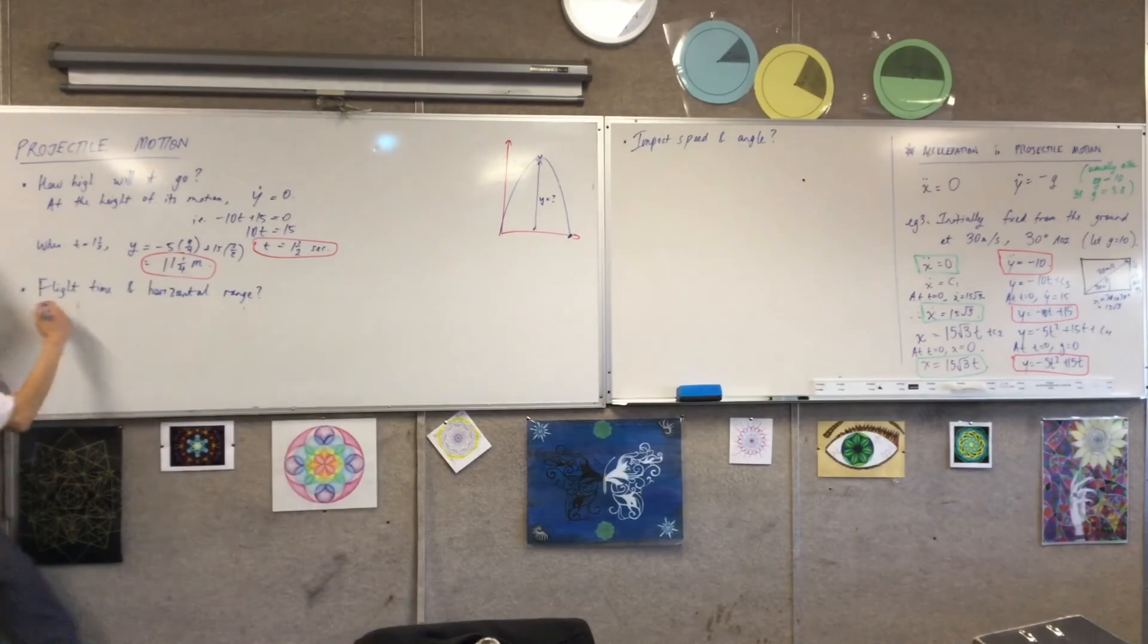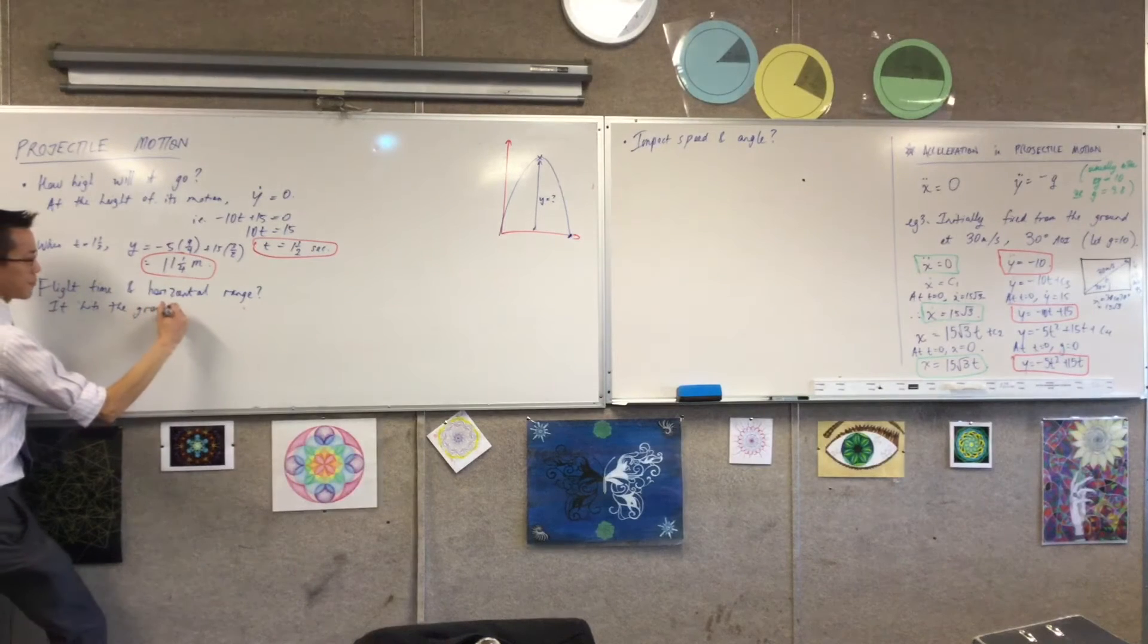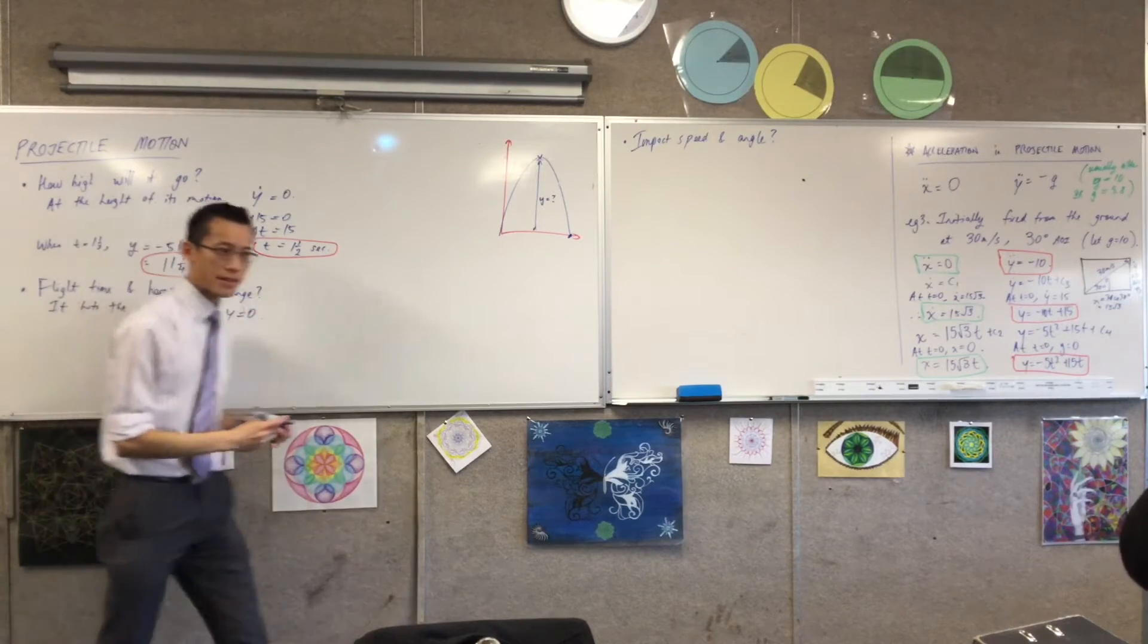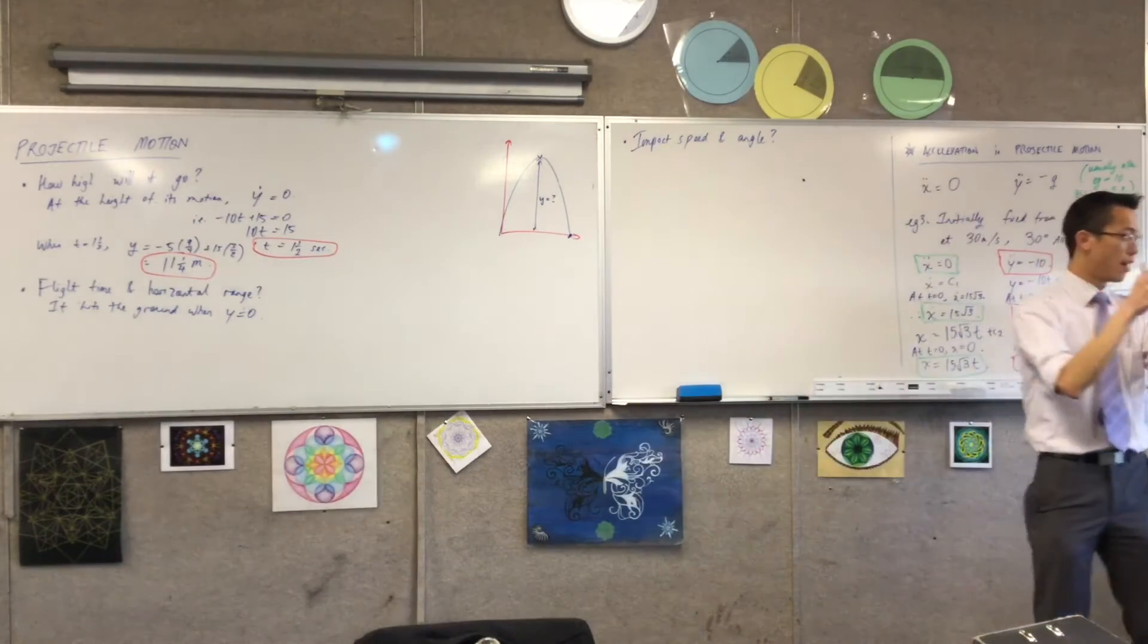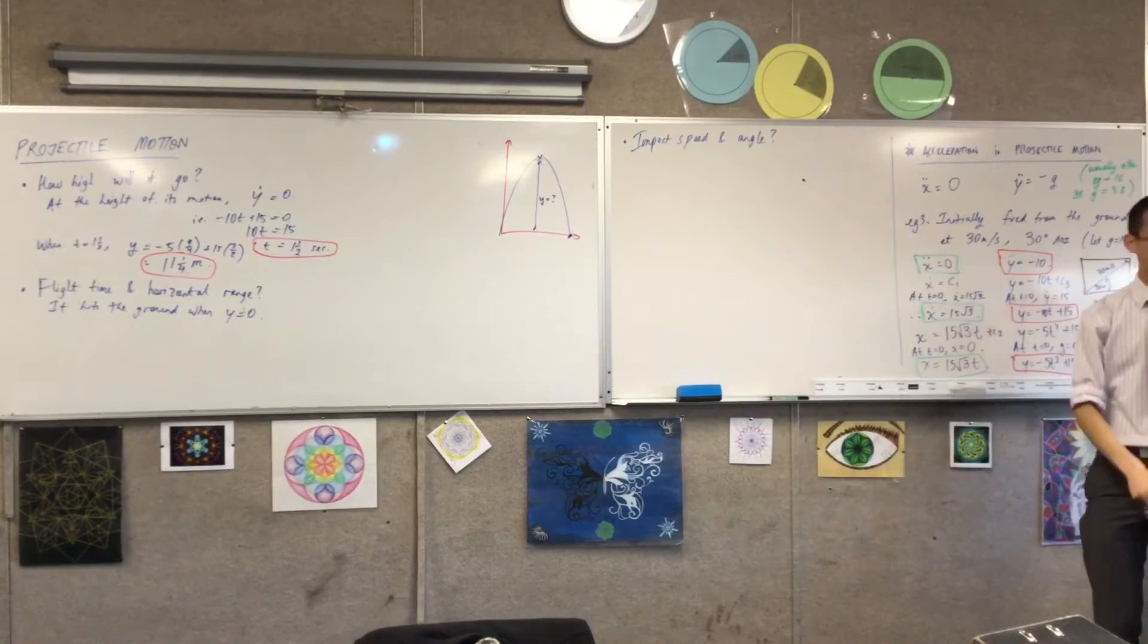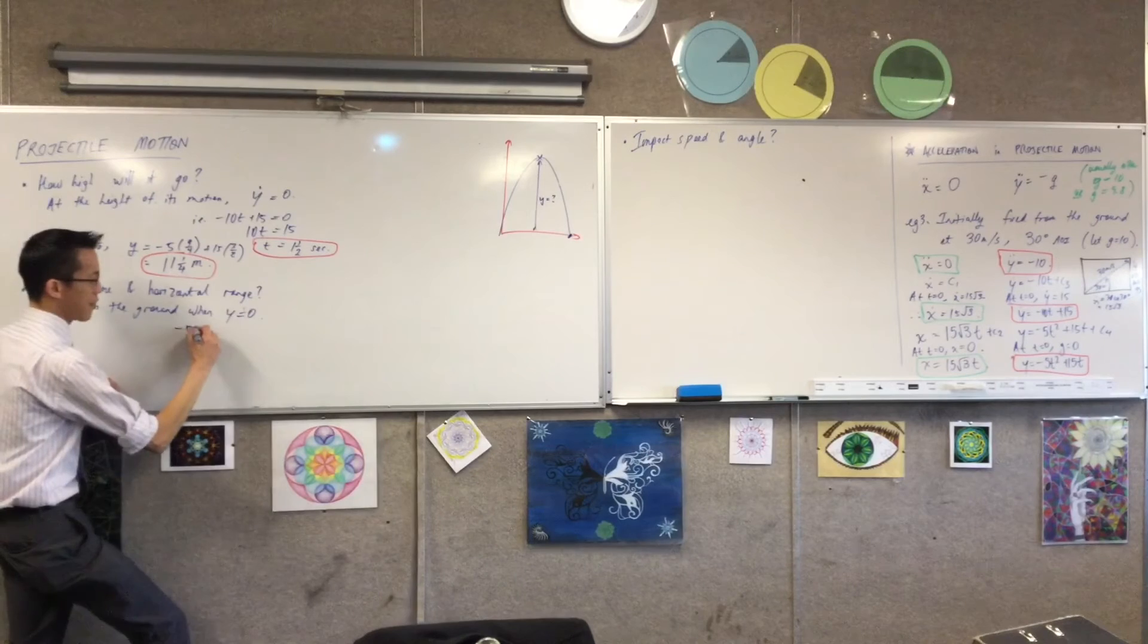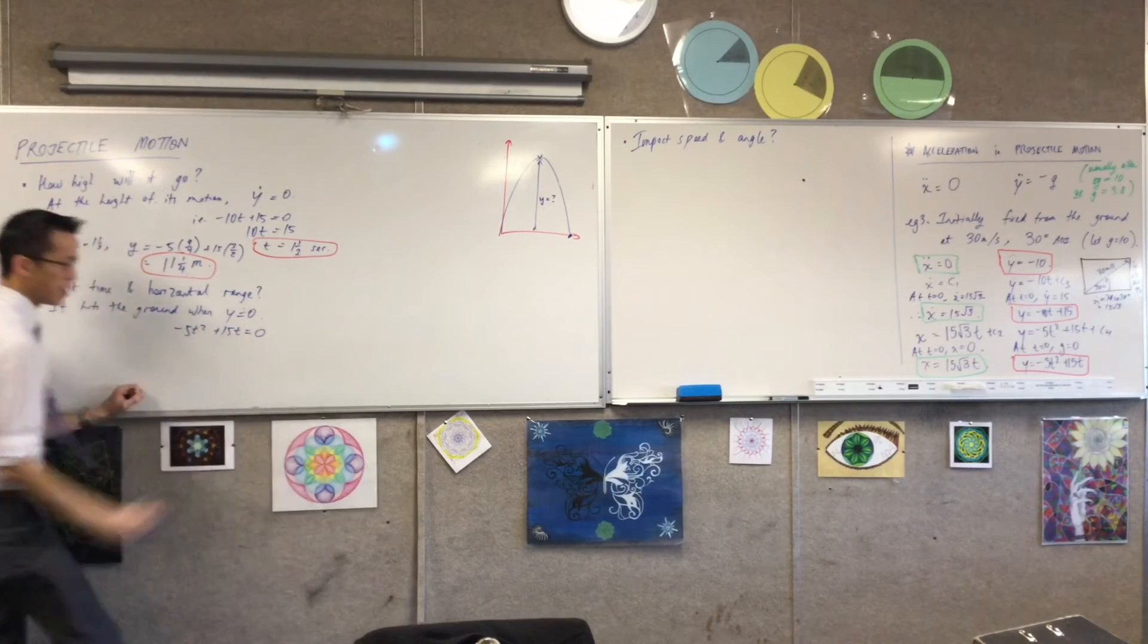So I'm going to say it hits the ground when y equals zero. I'm coming back to that, right? Because flight time is defined by how long I've been in the air and now I'm no longer in the air because y equals zero. I can go ahead, I can solve this equation. Minus 5t squared plus 15t equals zero.